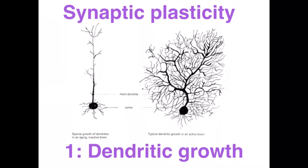The first one is dendritic growth. We've already talked about dendrites containing the receptor sites which receive, collect, and gather the incoming messages. As a result of memory formation and regular revisitation of that memory, we can create new receptor sites. Not only that, but we get dendritic branching, so we've got more antennas to receive these incoming messages.